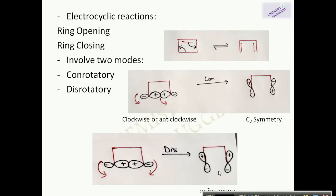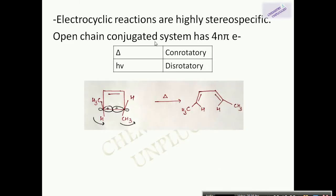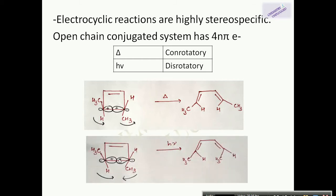Electrocyclic reactions are highly stereospecific in nature. If an open-chain conjugated system has 4n pi electrons, the movement will be conrotatory when the reaction is thermally induced, and disrotatory for photochemically induced reactions. For example, in cyclobutene the open-chain conjugated system has four pi electrons, so when thermally induced, the sigma bond breaks by conrotatory movement, and when photochemically induced, it breaks by disrotatory movement.